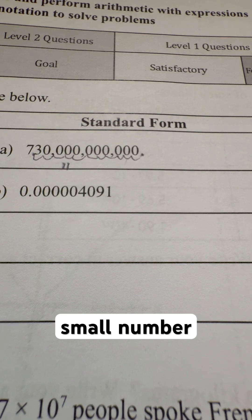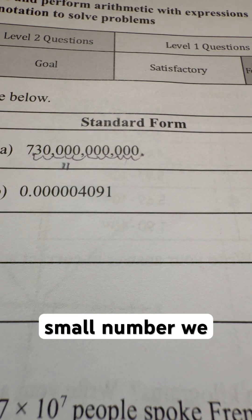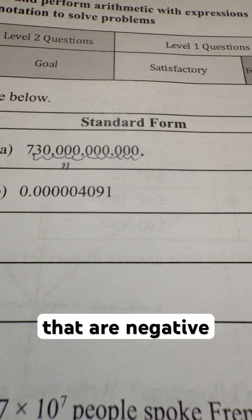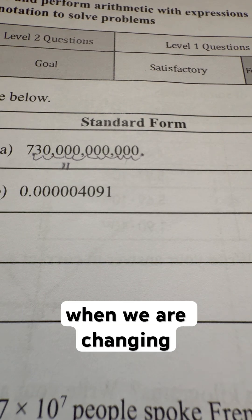So we've got this very small number. We are talking about writing negative exponents when we are changing it over.